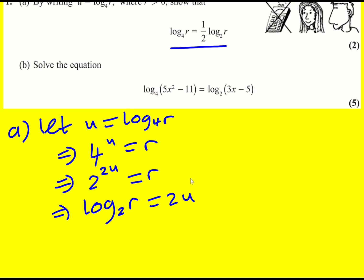So I've just rearranged the base and that means that u is going to equal a half log to base 2 of r. And we're done. So that must mean that log to base 4 of r is equal to 1 half log to base 2 of r.